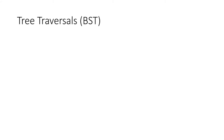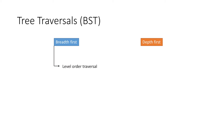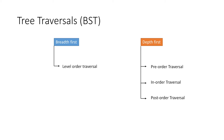Hello everyone. In this video we will learn different ways by which we can traverse a binary search tree. Tree traversals can be mainly divided into breadth first traversals and depth first traversal. In breadth first traversal we have level order traversal, and in depth first traversal we have preorder traversal, inorder traversal and postorder traversal. So let's try to understand them one by one.